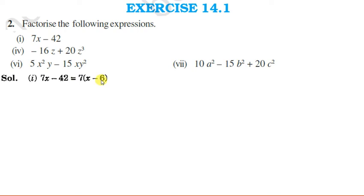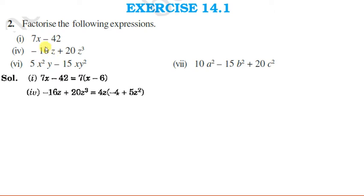In the next part, since 4 is a factor of both 16 and 20, and z appears in both terms, we can take 4z common. After taking 4z common: 16 divided by 4 is 4, so minus 4 remains; z is already taken common. 20 divided by 4 is 5, and from z³, one z is taken common, so z² remains. The result is 4z(−4 + 5z²).